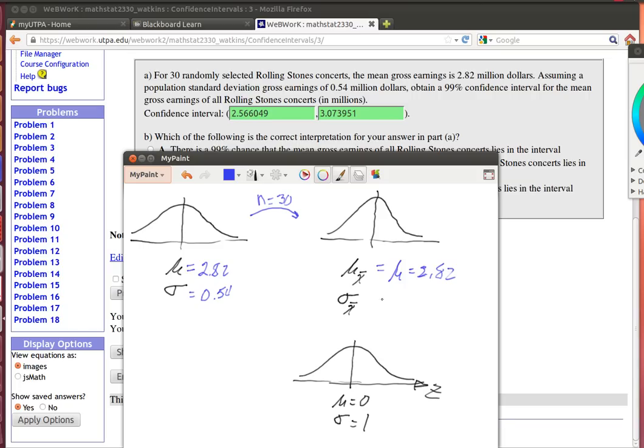And the standard deviation over here is going to be the standard deviation of the population divided by the square root of N. So the standard deviation of the distribution of all sample means is going to be the 0.54 divided by the square root of 30.